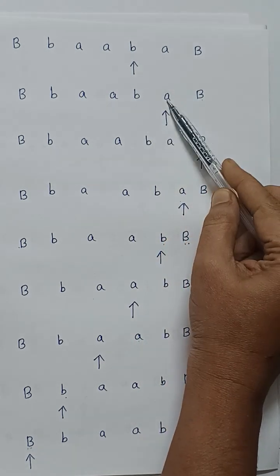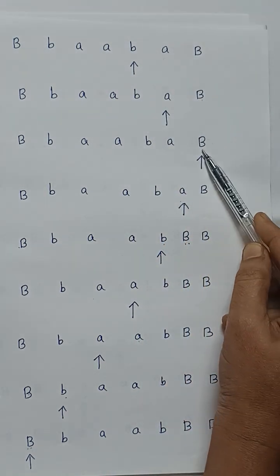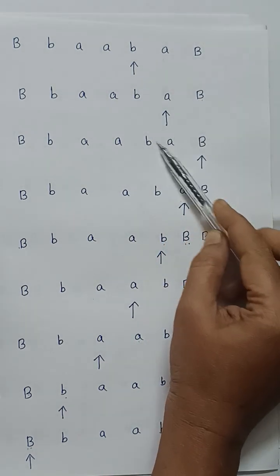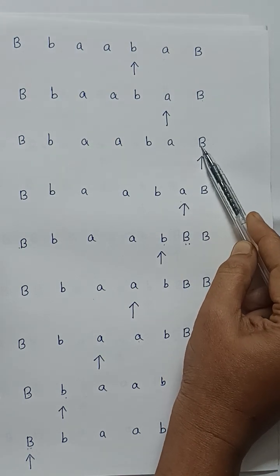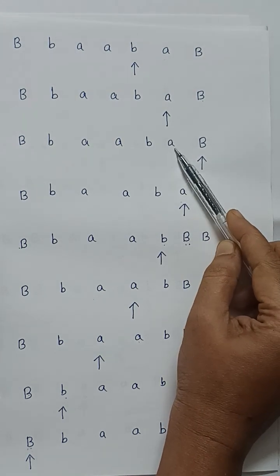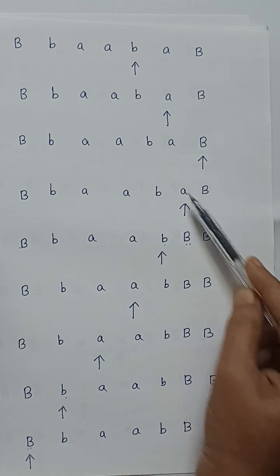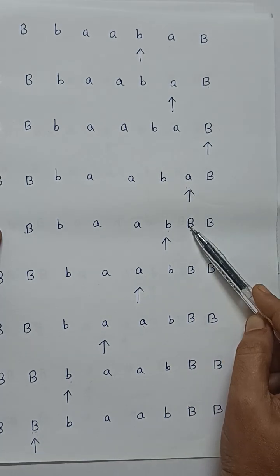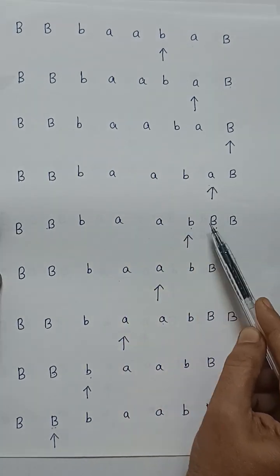We can't identify which is the last symbol until we reach the blank symbol. When we reach blank, then we understand that 'a' is the last input symbol. So read 'a', now replace 'a' with capital B. The first input symbol and the last input symbol have been matched. Now I should go for the second input symbol.